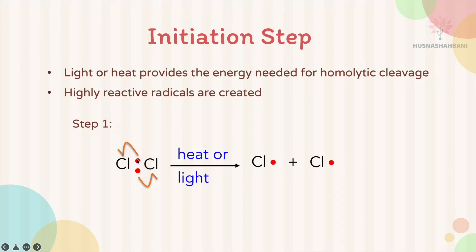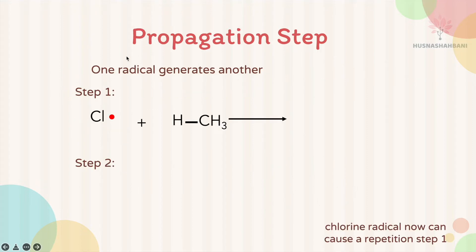One electron moves to the Cl on the left and another electron transfers to the Cl on the right, meaning each Cl receives one electron. This homolytic cleavage can only happen in the presence of heat or light, producing two chlorine free radicals.